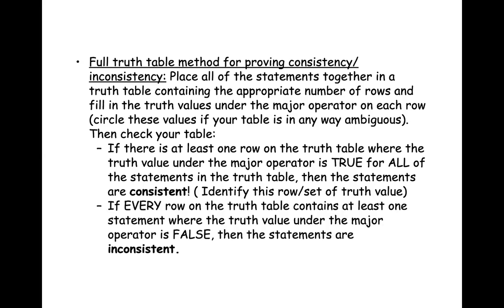However, if every row on the truth table contains at least one statement where the truth value under the major operator is false, then the statements are inconsistent. If you look across the rows and even just one statement is false, that row does not demonstrate consistency. And if all of the rows have that characteristic — at least one false statement — then the statements are inconsistent.